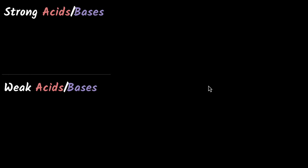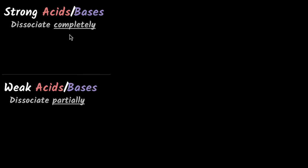Let's explore how to find whether a salt is acidic, basic, or neutral. To do that, we need to first understand the idea of strong acids and bases and weak acids and bases. Strong acids and bases are the ones that dissociate completely when you put them in a solution, and weak acids and bases are the ones that dissociate partially when you put them in the solution.